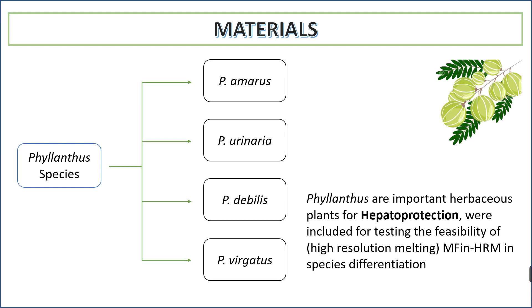Moving to the materials: we chose Phyllanthus species, which are of various types — Phyllanthus amarus, Phyllanthus urinaria, Phyllanthus debilis, and Phyllanthus virgatus.